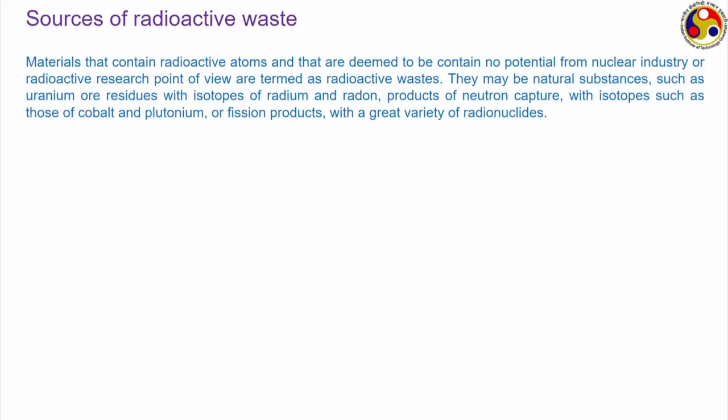As long as the waste has even the smallest possible potential, we would like to use it. Radioactive waste may be just natural substances such as uranium ore residues with radioactive isotopes of radium and radon. It can also contain fission products, products with very high neutron capture cross-sections like neutron poisons, and isotopes of cobalt and plutonium. Fission products themselves are radioactive and can go through a series of radioactive decays to eventually convert to stable isotopes.